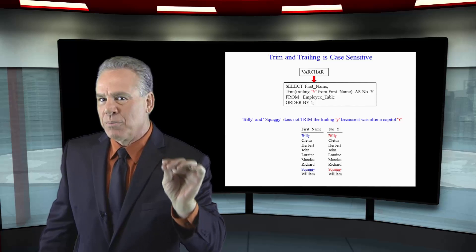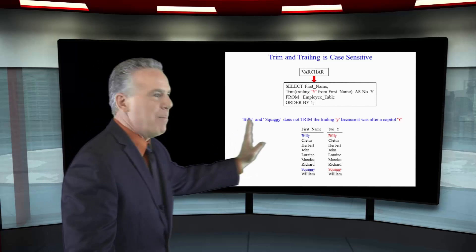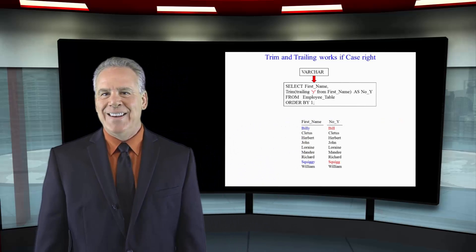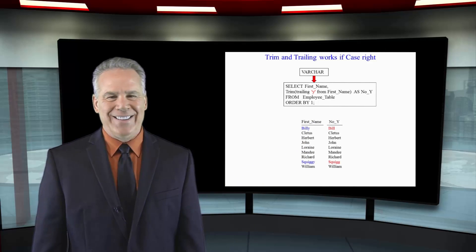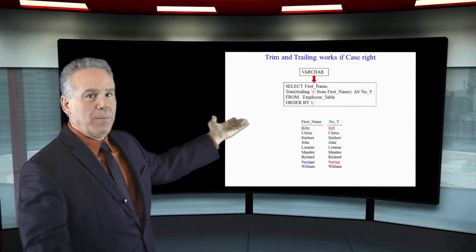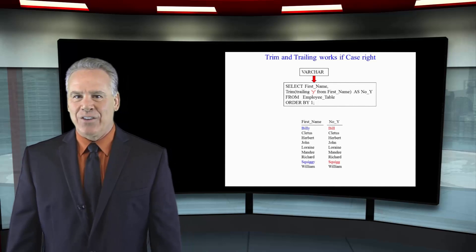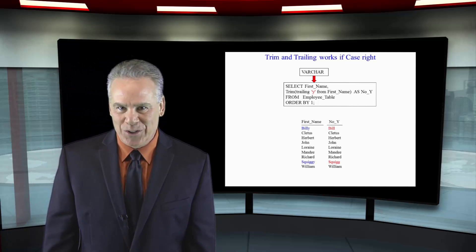So I'm going to move that to a lowercase Y and you're going to see that Billy should become Bill. Now we've got that lowercase Y in the query. We select first_name — it's a VARCHAR field, there are no spaces here — and then we're going to trim the trailing lowercase Y from first_name. And as you can see, Billy is now Bill, and down here Squiggy is now Squig. Add that to the tool chest.